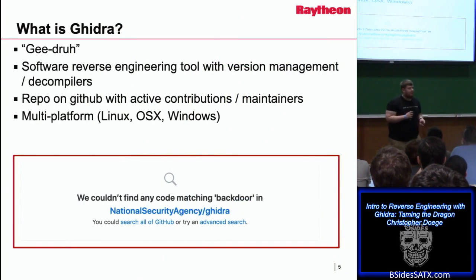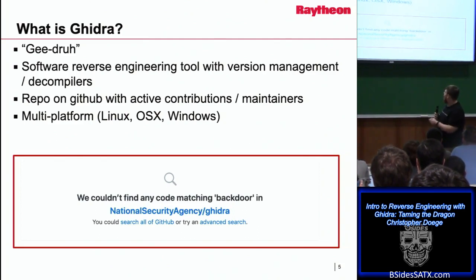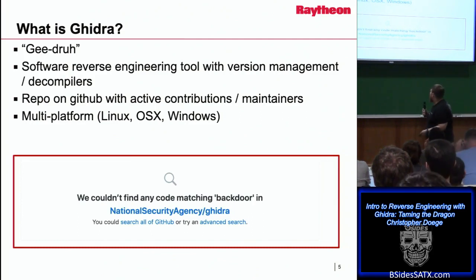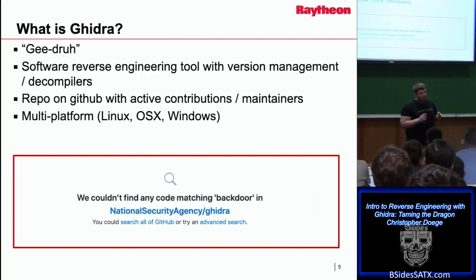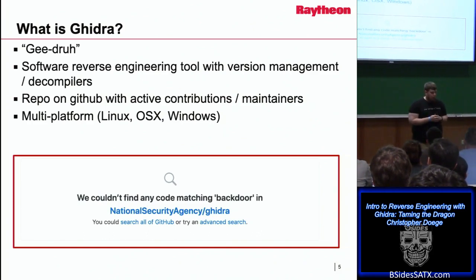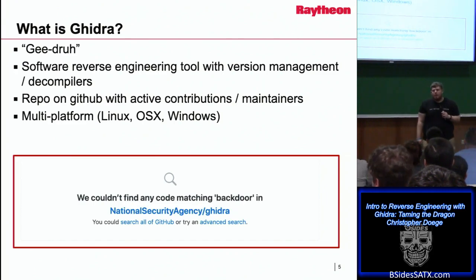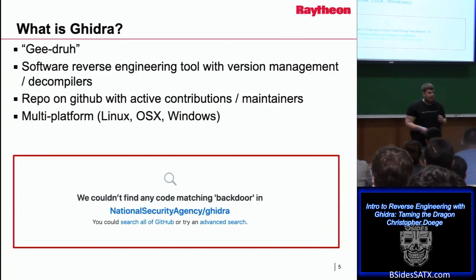So what is Ghidra? From the Ghidra SRE website, the official pronunciation is 'Ghidra,' though some say 'Gidra.' It's a software reverse engineering tool with version management and decompilers. The version management is interesting — similar to Git, you can track binaries and submit them locally or to a server. If you're sharing a reverse engineering task across a team of 20 or 30 people, someone can commit changes to a server and others can merge or deny them.